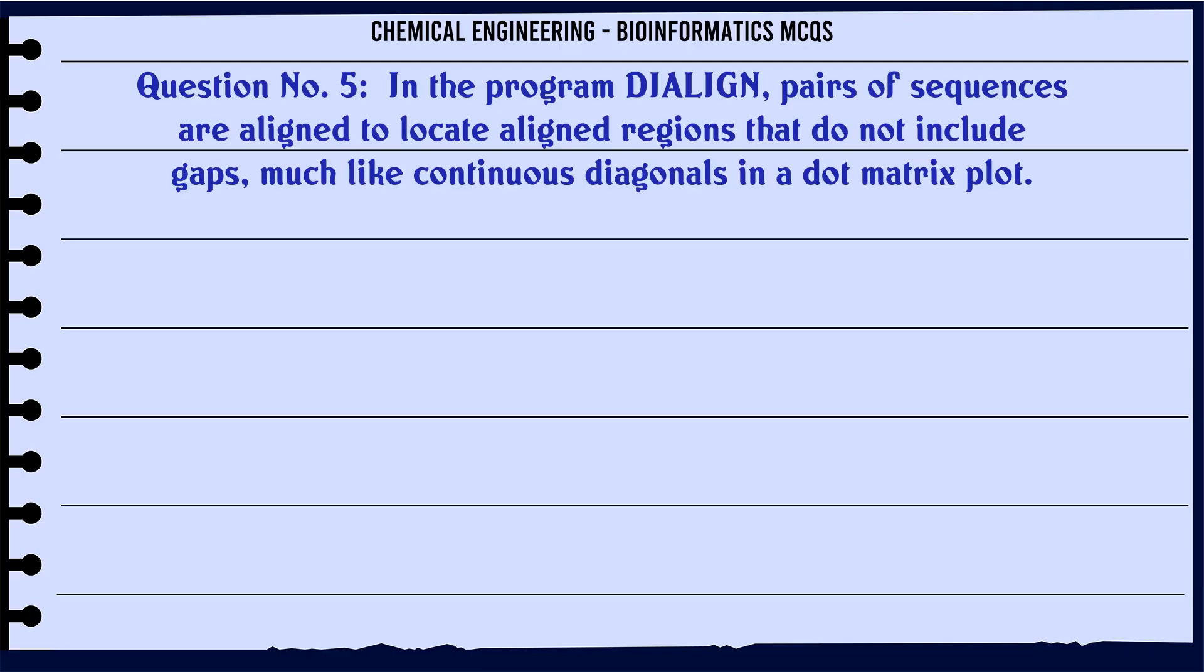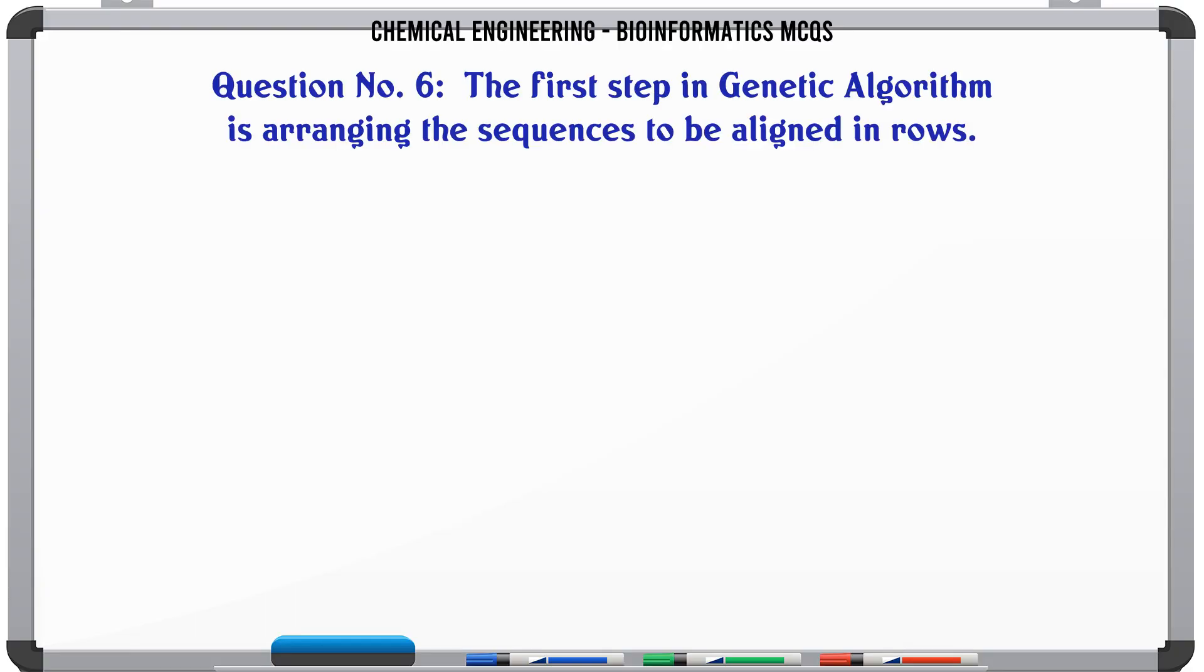The first step in genetic algorithm is arranging the sequences to be aligned in rows. A. True. B. False. The correct answer is: True.